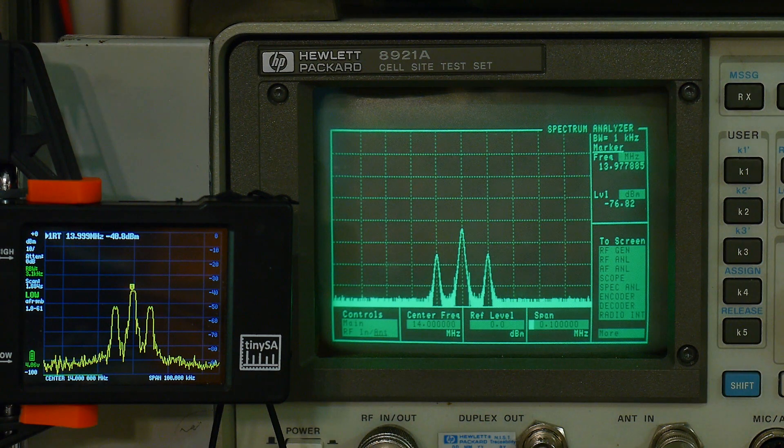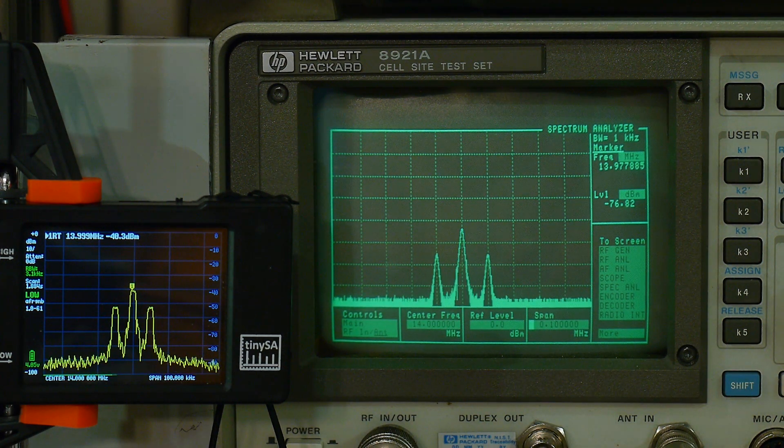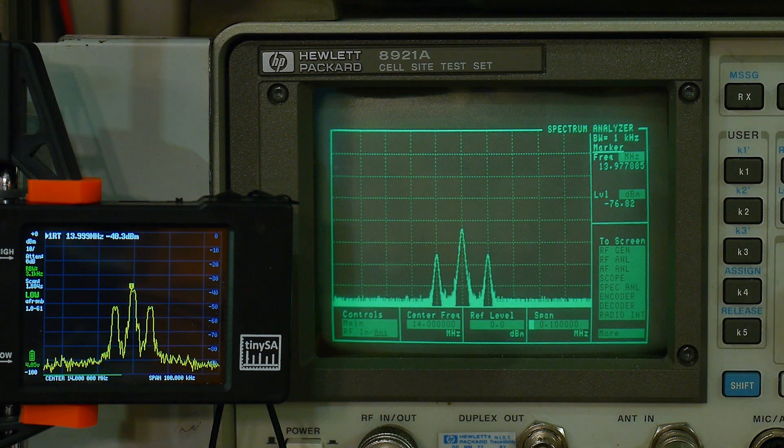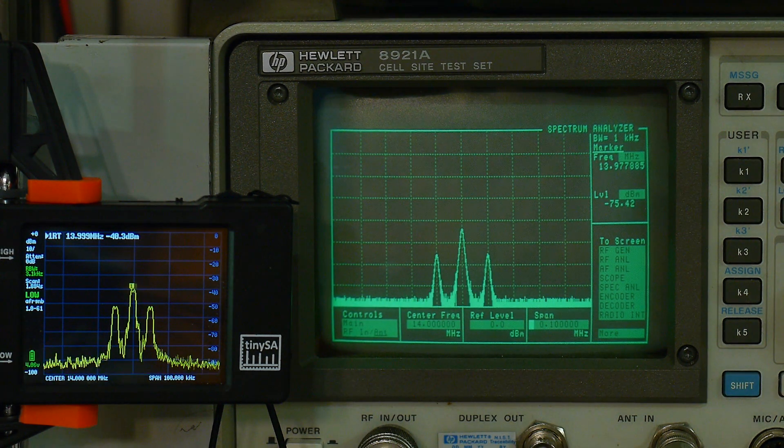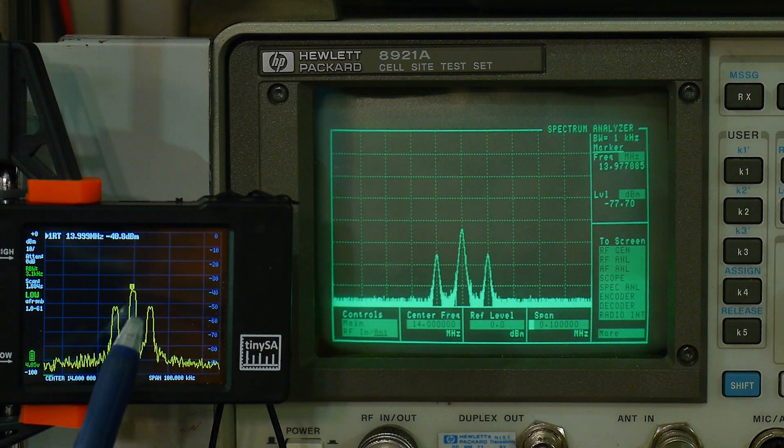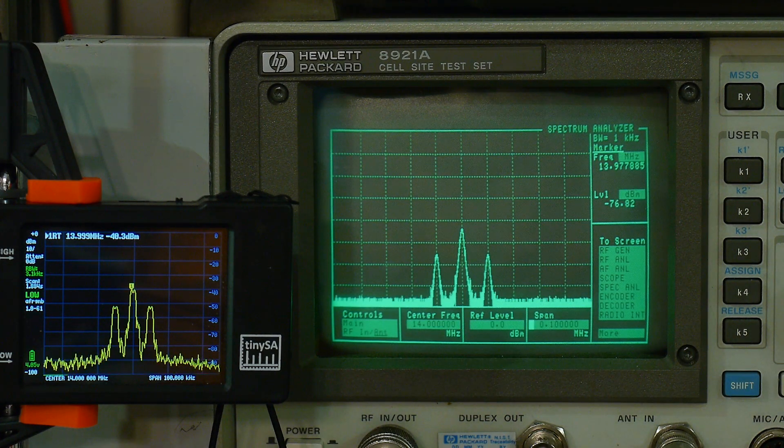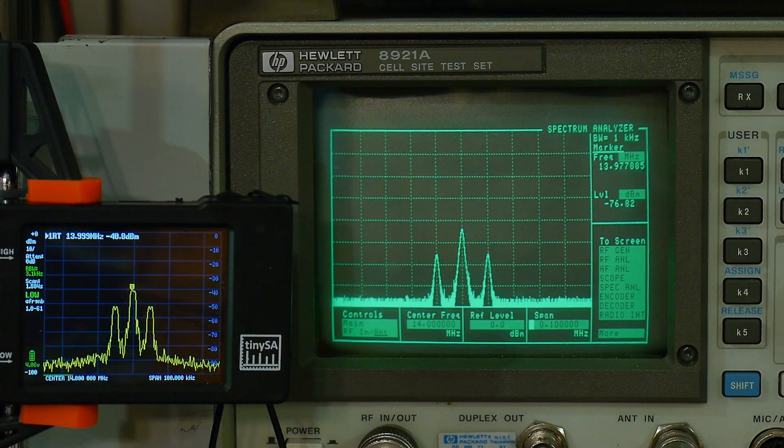The limitation is though, you need to send it very small signals. It can't handle large signals. So as long as you get the attenuation correct, it's going to do a good job. Now you can change the attenuation internally. I haven't played with that yet. I'm changing it externally to make sure that I'm within the bounds of the SA.